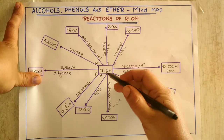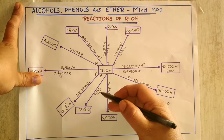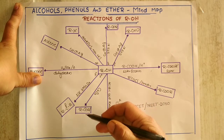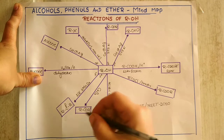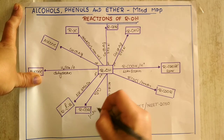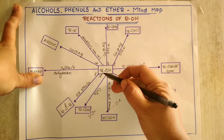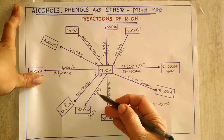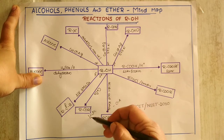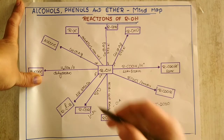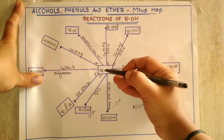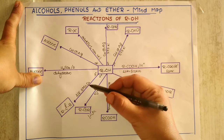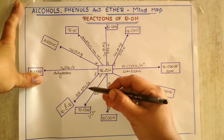Similarly, when alcohol is treated with chromium trioxide (CrO₃), it results in the formation of a ketone. Particularly, it is a secondary alcohol that when treated with chromium trioxide gives the respective ketone. Chromium trioxide is also taken as an oxidizing agent here.